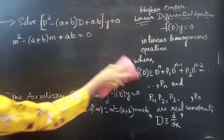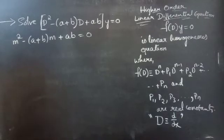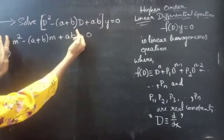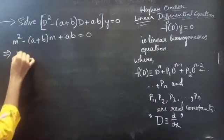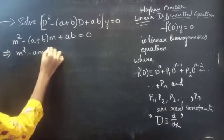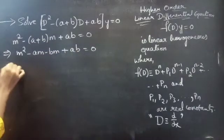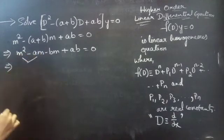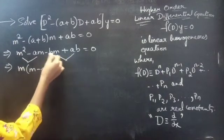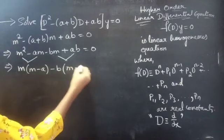Now we will factorize it. Consider this polynomial: m squared minus (a plus b) into m plus ab equals to 0. We can write the equation as m squared minus am minus bm plus ab equals to 0. Take m common from the first two terms to get m times (m minus a), and take minus b common from the next two terms to get minus b times (m minus a).